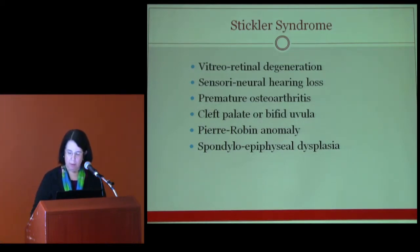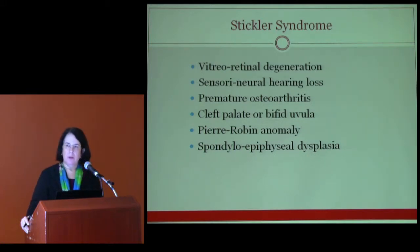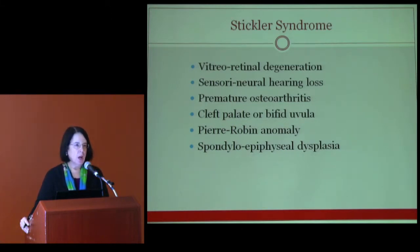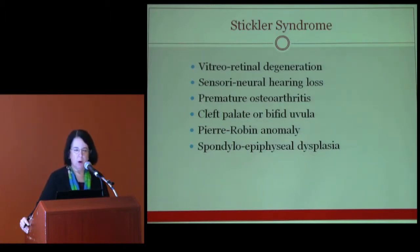Going back to genetics: for Marfan syndrome, virtually all patients have mutations in the gene fibrillin 1, FBN1. For Loeys-Dietz syndrome, there are now at least four different types. The most common ones are caused by mutations in the genes transforming growth factor beta receptors 1 and 2 — TGFBR1 and TGFBR2.